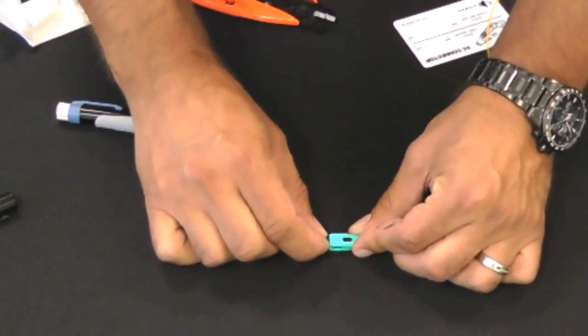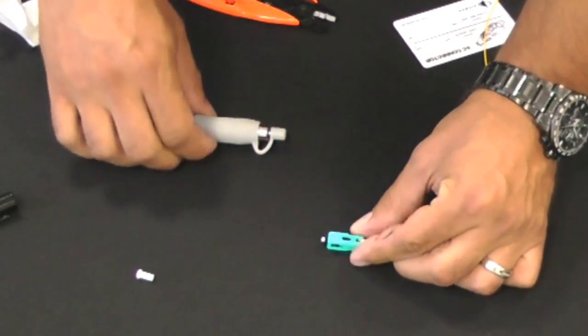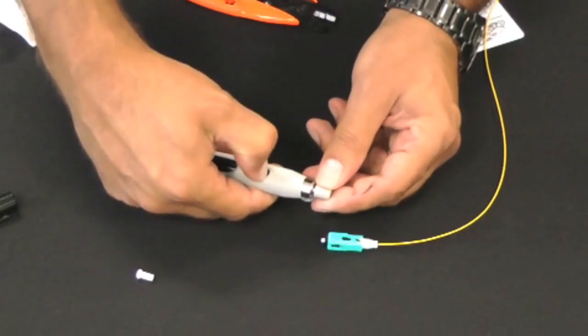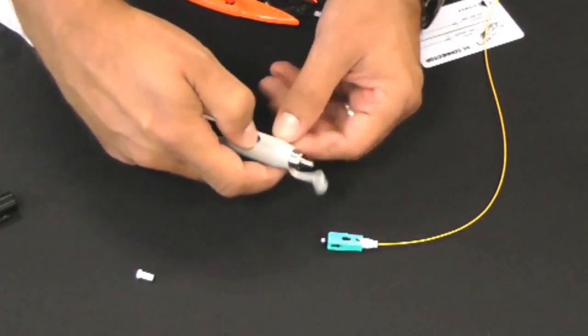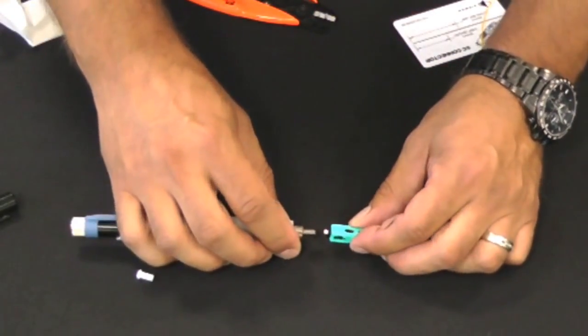After the connector has been terminated, use the 0.5 milliwatt VFL to verify the validity of the termination. Remove the dust cap and place the end face of the SC connector as shown into the end of the VFL.